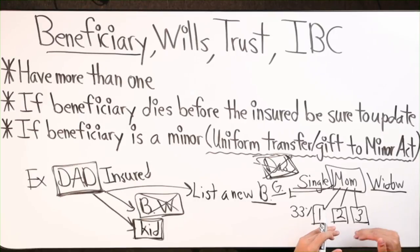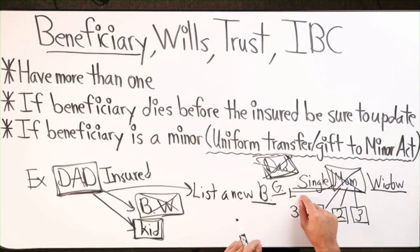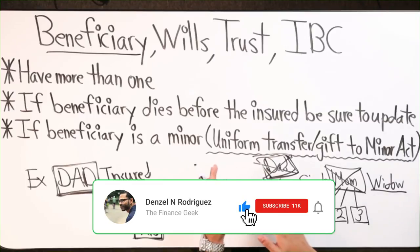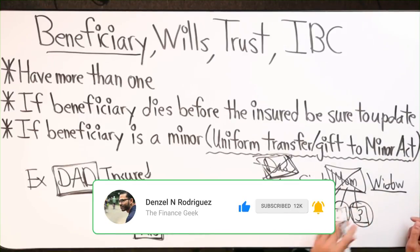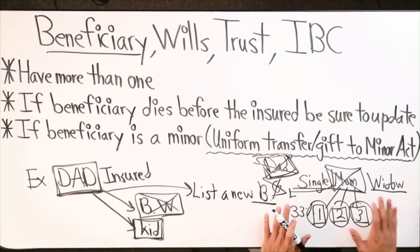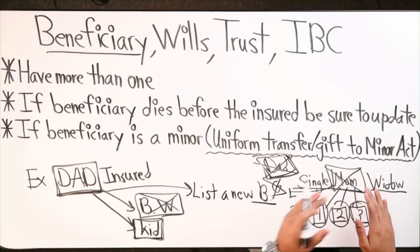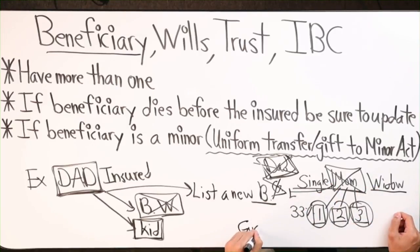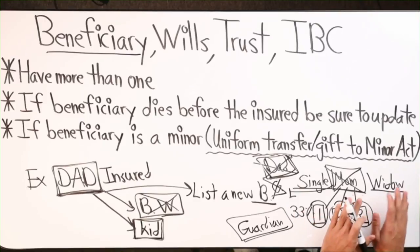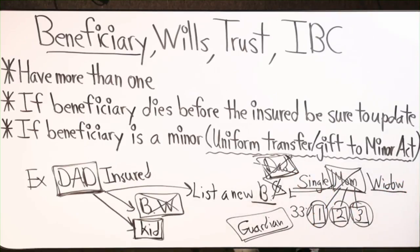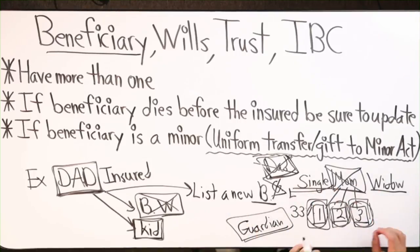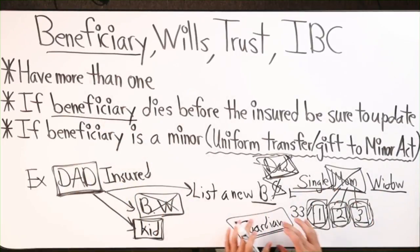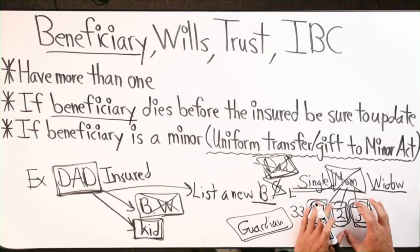Let's say in the event dad wasn't in the picture — it's just mom and kids — something happens to the mom. Mom passes away and she did not have a guardian or an adult as a beneficiary; it was just the minors. Let's say there is a godmother, godfather, or older sibling that would happily take these children in, but they weren't on the policy as a beneficiary. They're going to have to go through a long process to get access to that money to help take care of those three minors.